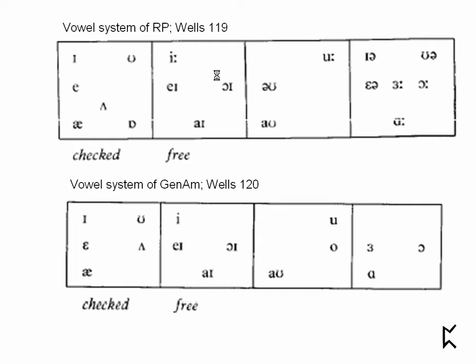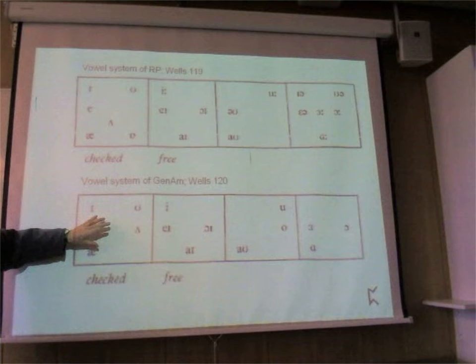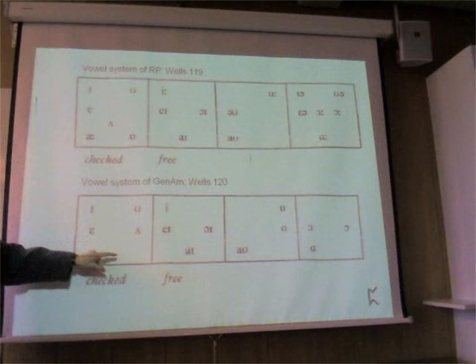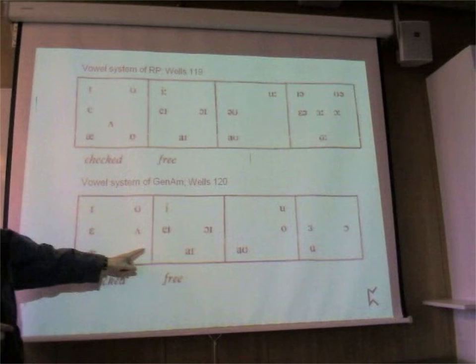This four-way distinction of all the vowels - these sets - are ones which work for all the native dialects. You can see the distinction between the RP system and the General American system, which is a little bit different. There's no lot, for instance, in the General American system.